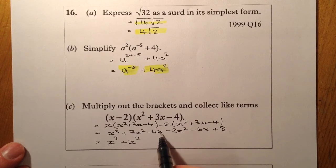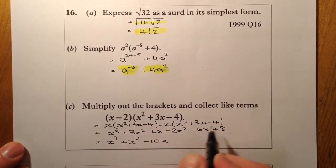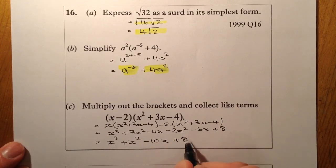If I look at my x terms here, so I've got minus 4 and minus 6, that'll give me minus 10x, and finally I've just got plus 8 on at the end there.